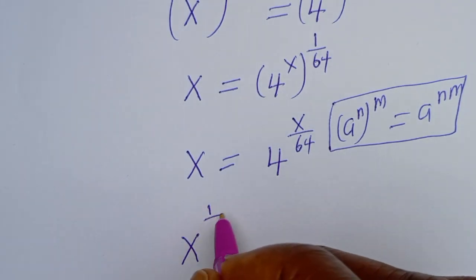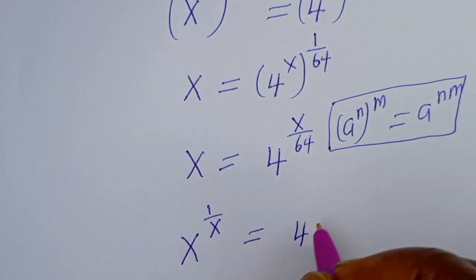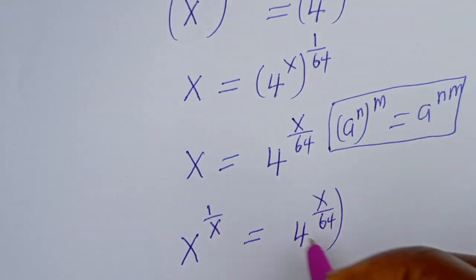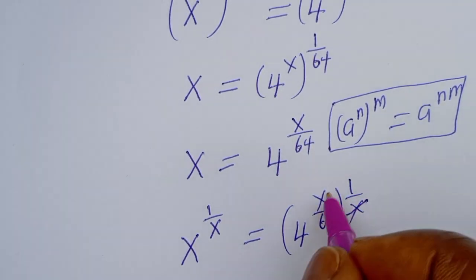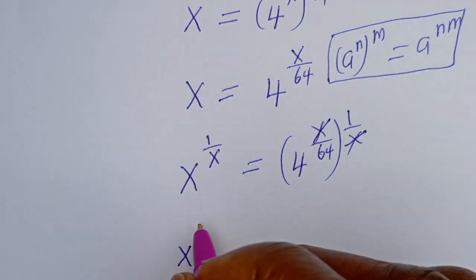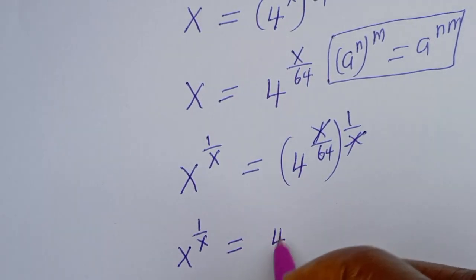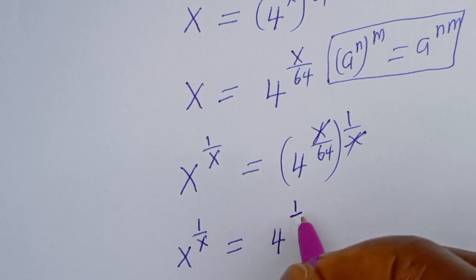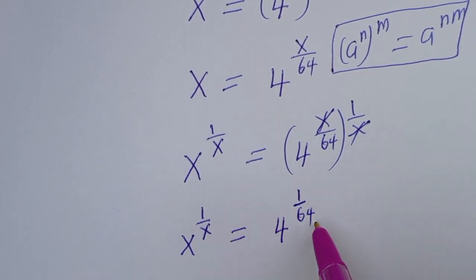So s to the power of 1 over s is equal to 4 to the power of s over 64, raised to the power of 1 over s. This gives us s to the power of 1 over s is equal to 4 to the power of 1 over 64.